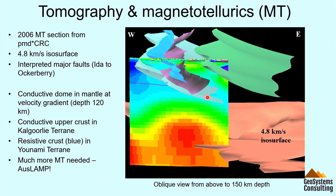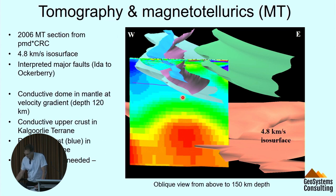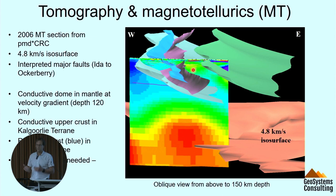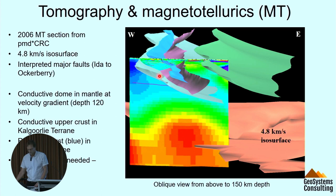Magnetotellurics is a dataset that's really short here in the Yilgarn and in WA in general, and I really look forward to GSWA and GA investing more in it. We collected this line in 2006. We see this conductivity bloom coming up along that edge. But importantly in the upper crust, in what we call the golden corridor between Kalgoorlie and Wallaby, we see this conductivity — a pattern we see elsewhere, up in the Tanami, in northern Australia, across in eastern Australia. There's a strong empirical relationship between the gradients of these conductivity anomalies and gold. It would be great to see more MT data here.